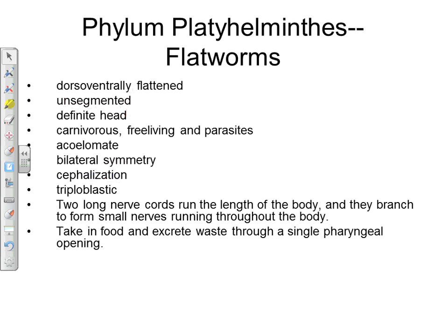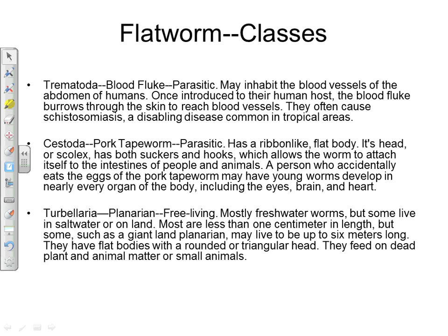There are three main classes in Platyhelminthes. The first is Trematoda, which includes the flukes. These worms are almost always parasitic. They often get into the blood vessels and abdominal area of humans by burrowing through skin. One of the most common worm diseases in the world is schistosomiasis, typically contracted by wading or swimming in freshwater ponds and lakes, where the worm burrows through the skin and into the bloodstream.